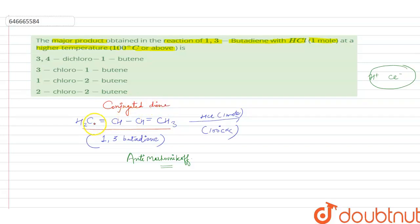Conjugated diene means there are alternate double bonds. The double bonds are present at alternate positions and these conjugated dienes are very stable, so they break at higher temperatures.